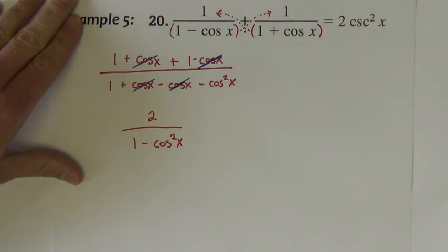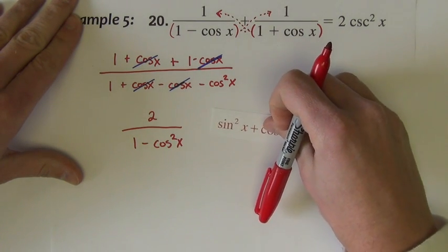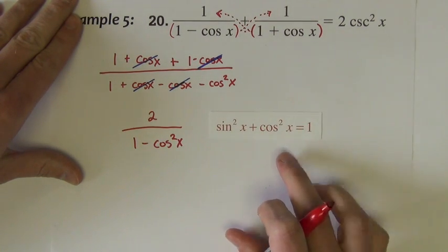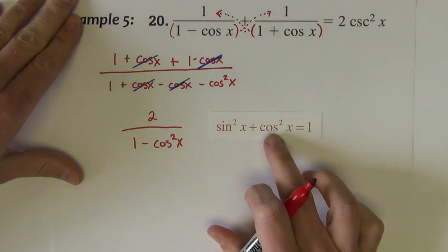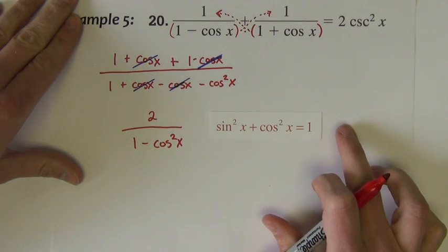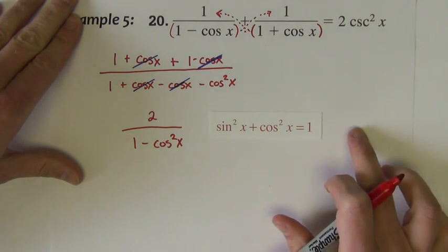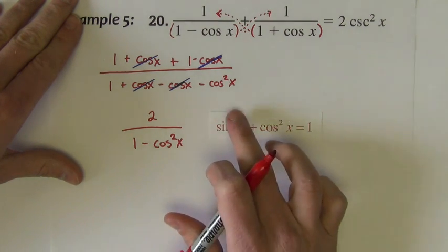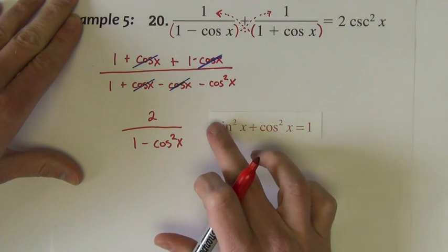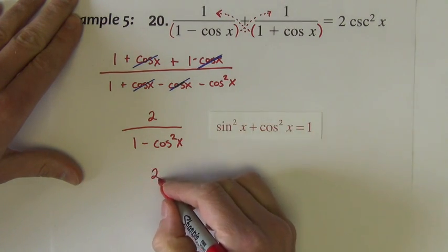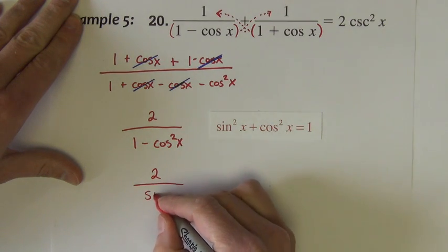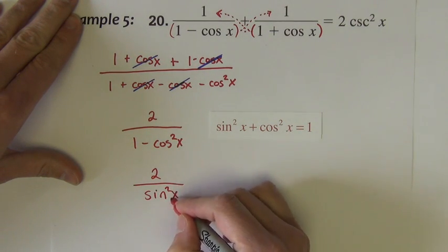1 minus cosine squared, I recognize that. If I take this Pythagorean identity and subtract the cosine squared across, 1 minus cosine squared would be equal to sine squared.